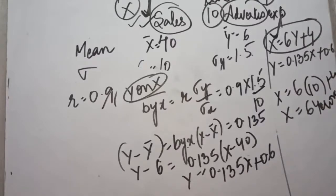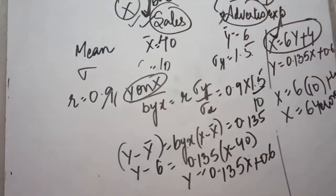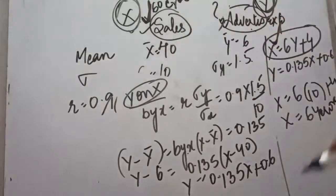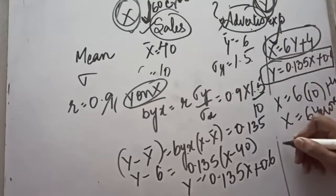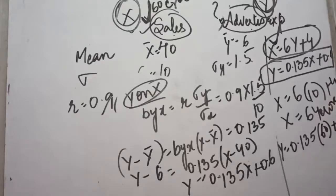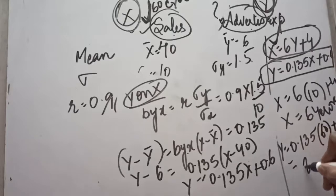Another part of the question asks: what would be the advertisement expenditure if sales is 60 crore? Here, x (sales) = 60 crore is given and y (advertisement expenditure) has to be calculated. So we use the y on x equation: y = 0.135 × 60 + 0.6 = 8.1 + 0.6 = 8.7 crore. If one variable is given, the value of the other variable can be calculated using its corresponding regression equation.